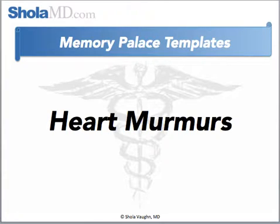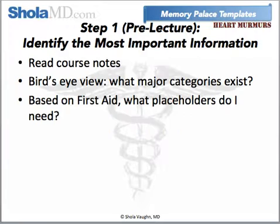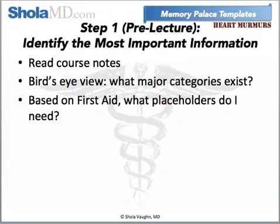So when I took cardiology, how did I approach the material on murmurs? How does a person create a memory palace? Well, step one is to identify the most important information, like I've talked about in my five-part study strategy planner. If you didn't watch the video about my five-part study planner, drop me an email at info@SholaMD.com, and I'll send you the link and sign up for my mailing list so that you don't miss out next time.